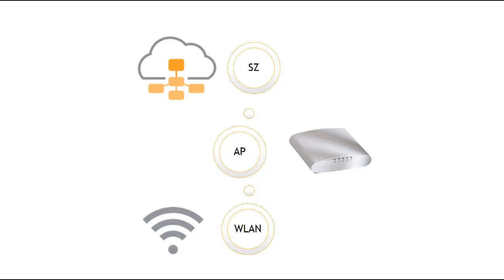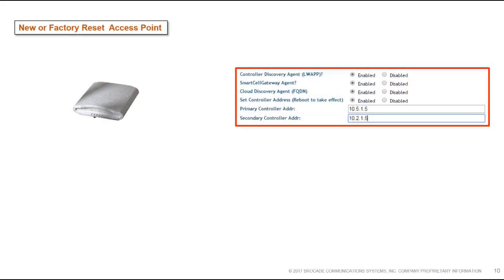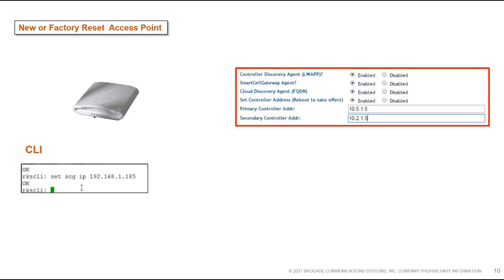When we want the access point to start communicating with the controller, we have a couple of options. The first is the access point GUI, which lets you specify a primary and secondary controller. Another option is the CLI, which we'll be using in this demonstration, where we use the 'set SCG IP' command. For older access points you might use the 'set director IP' command, depending on which AP and firmware you're running.